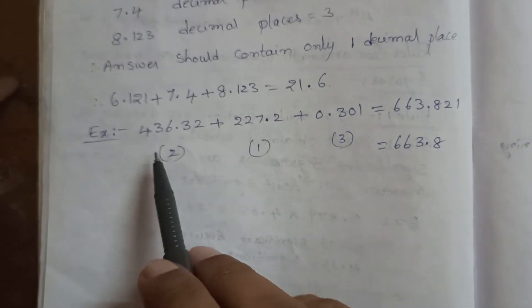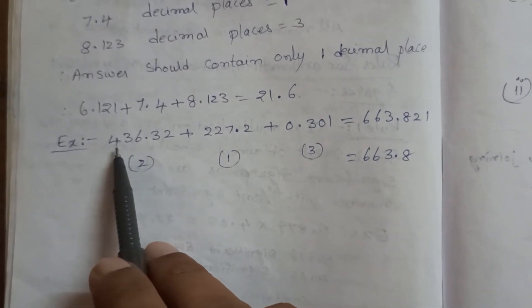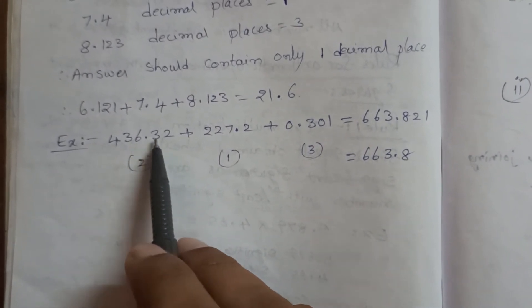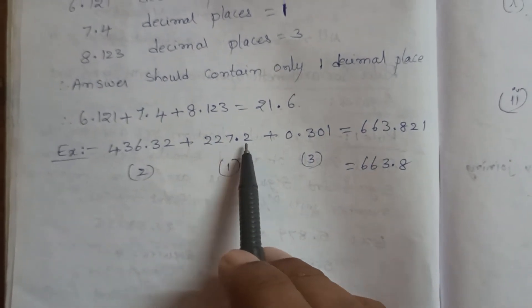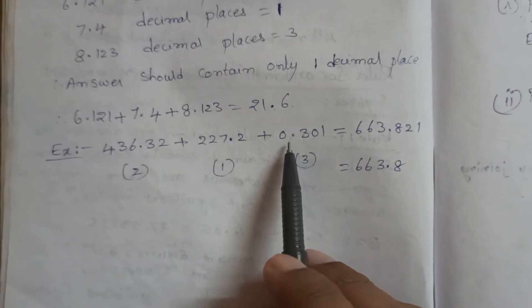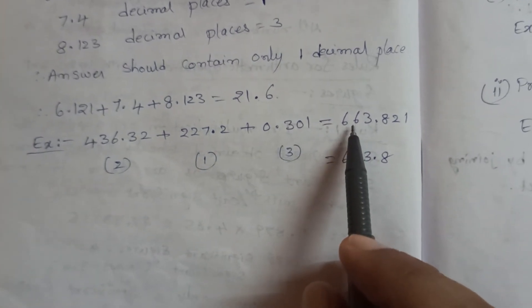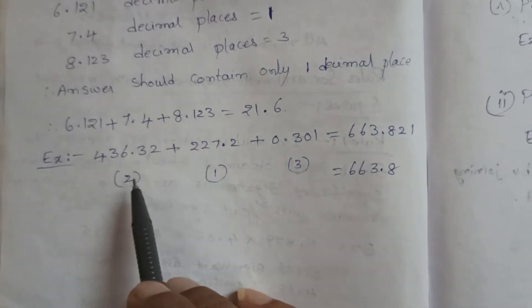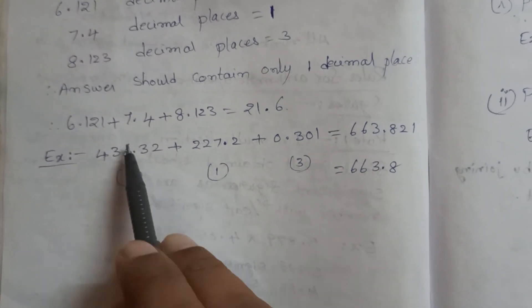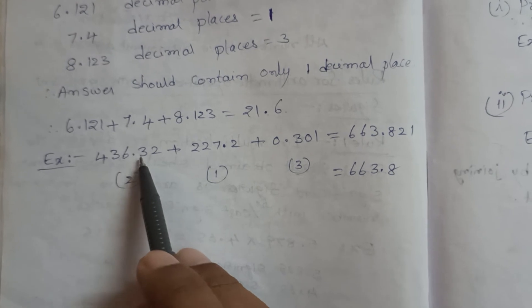One more example: 436.32 + 227.2 + 0.301. The raw answer is 663.821. But according to significant figures rules, here we have 2 decimal places, 1 decimal place, and 3 decimal places respectively.